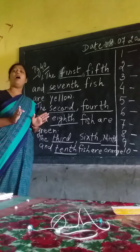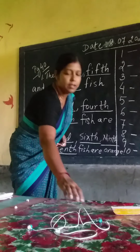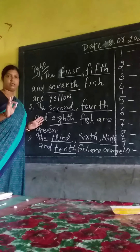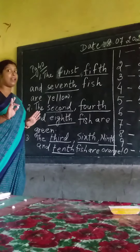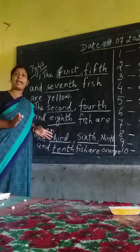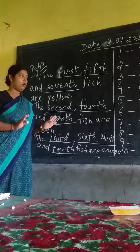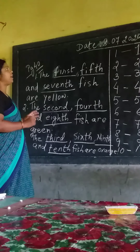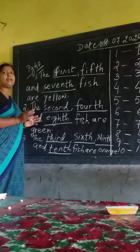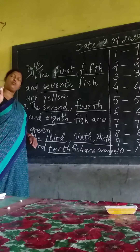How many fish are green in all total? There are ten fish altogether — first, second, third, fourth, fifth, sixth, seventh, eighth, ninth, tenth. There are ten fish in all total. But we have to categorize them according to their colors — we are separating them by color.